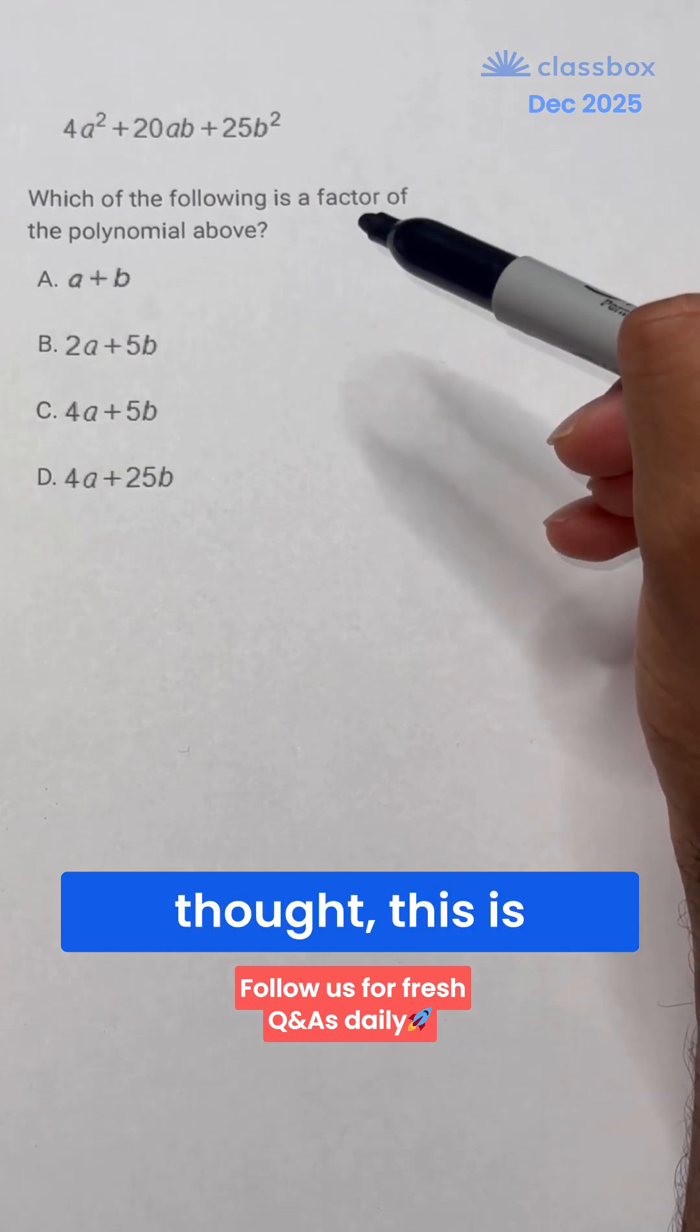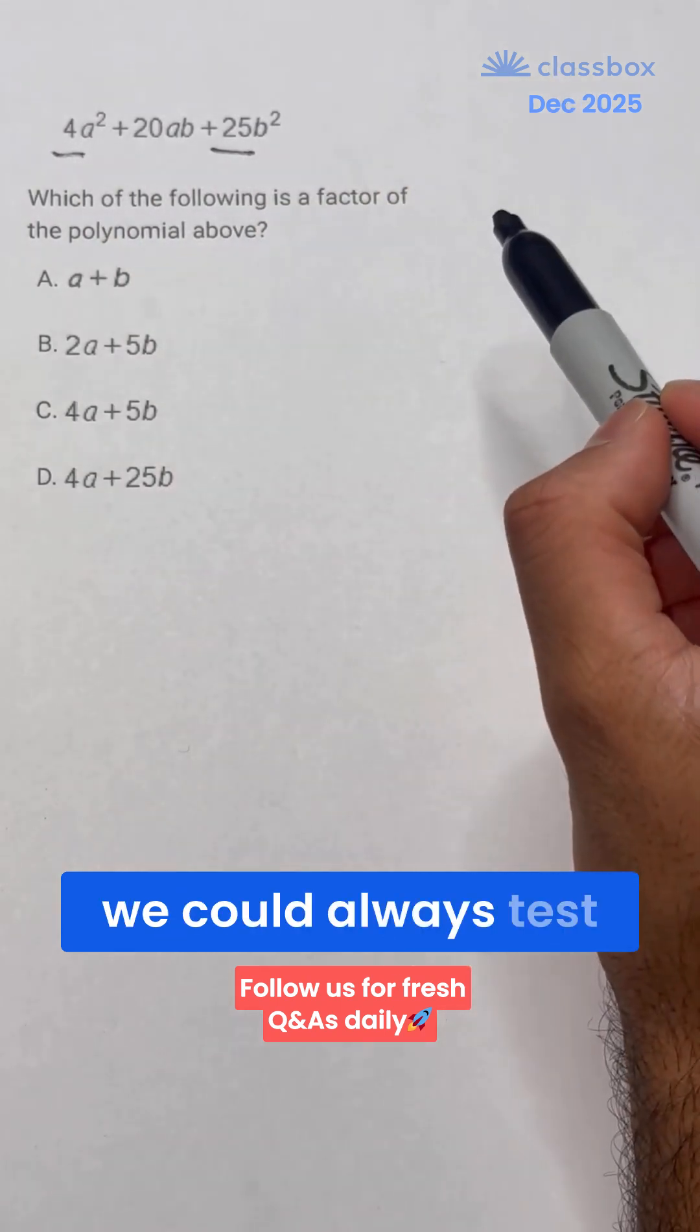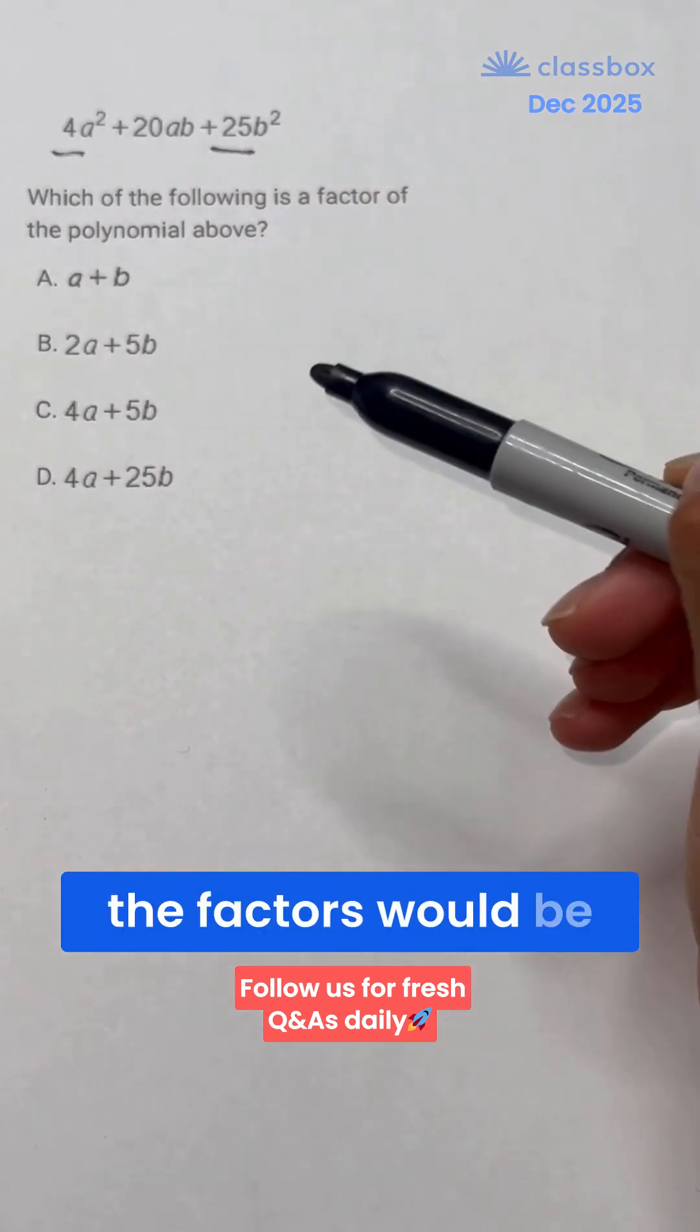But on first thought, this is actually easier than we expected. When we have two perfect squares, we could always test to see if the factors would be perfect squares.